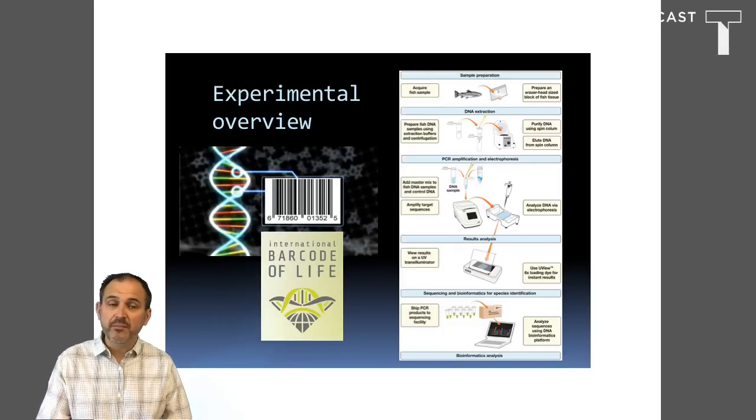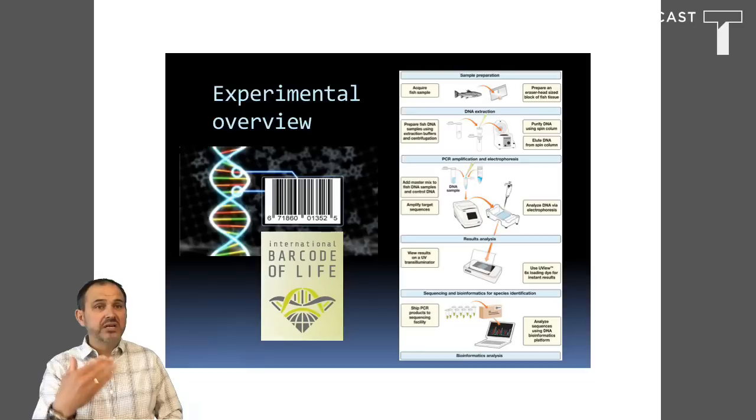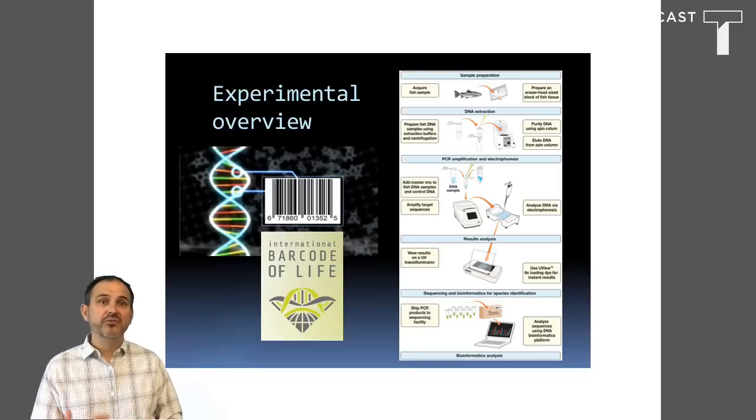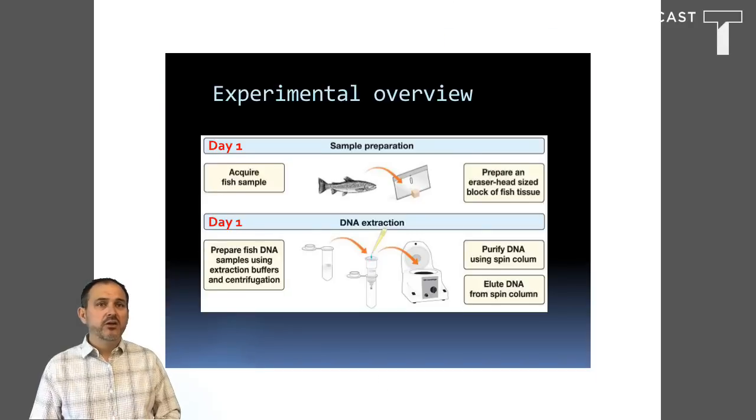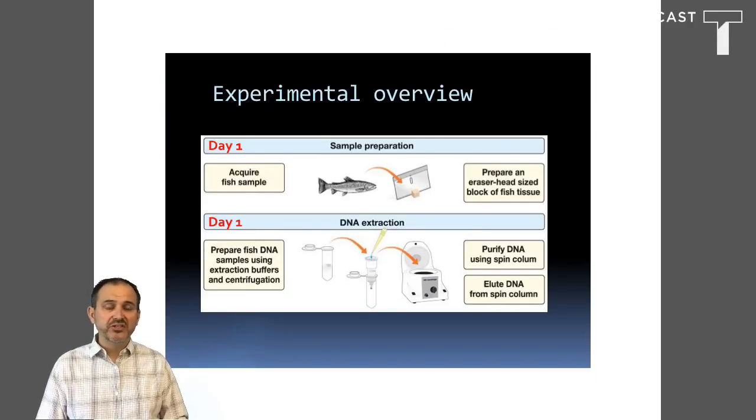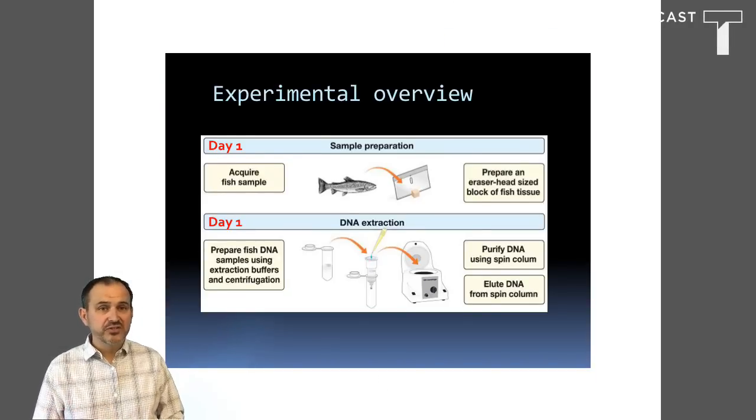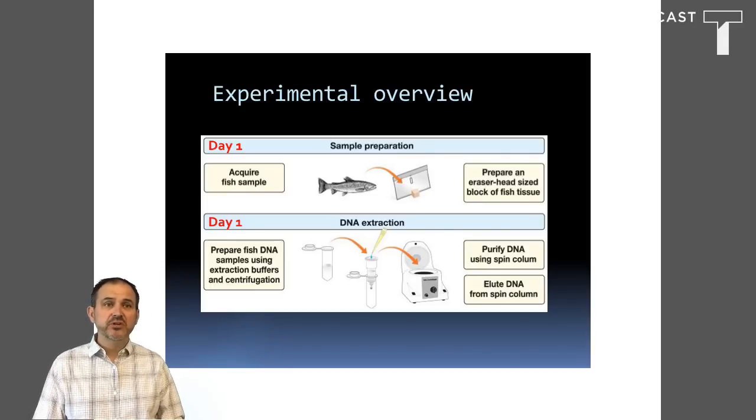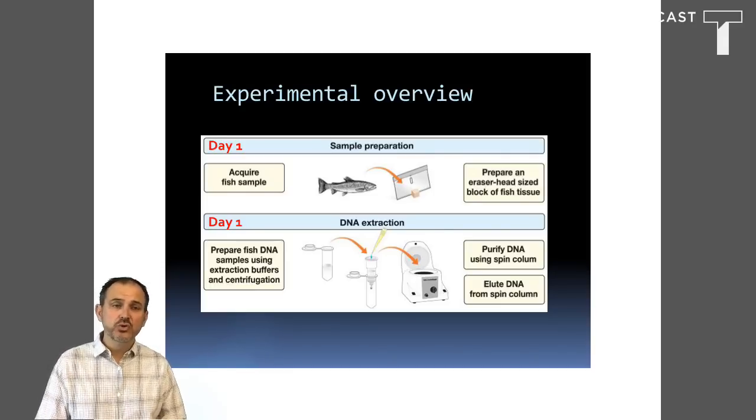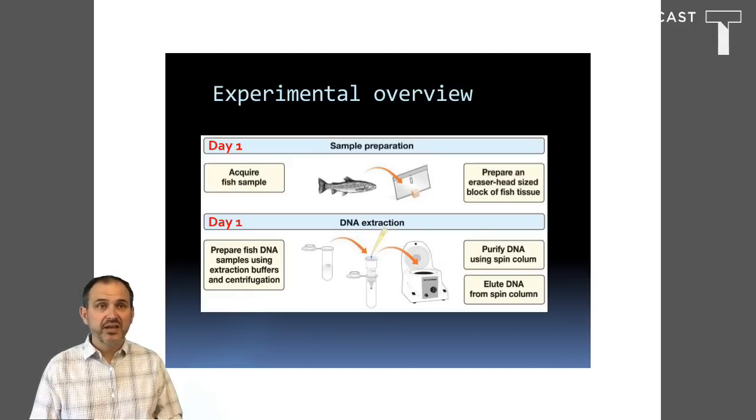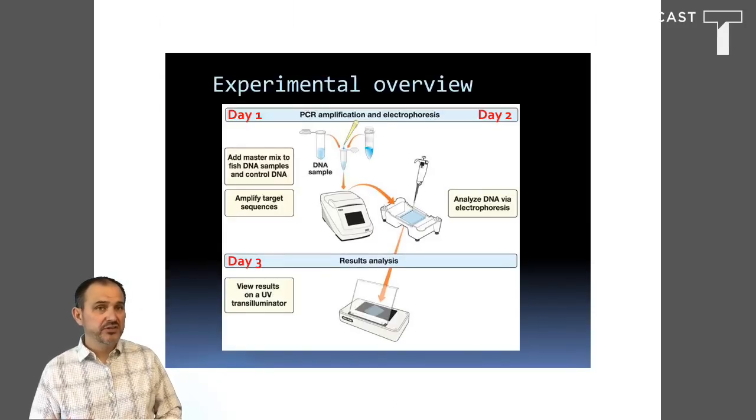Speaking of that, or I should say with that in mind, let's go through step-by-step the process involved in DNA barcoding. We'll begin with sample preparation and DNA extraction. This will involve using a series of extraction buffers and centrifugation steps to bind and subsequently elute the DNA from a spin column. Once we have the total DNA isolated, we'll move on to the next step.